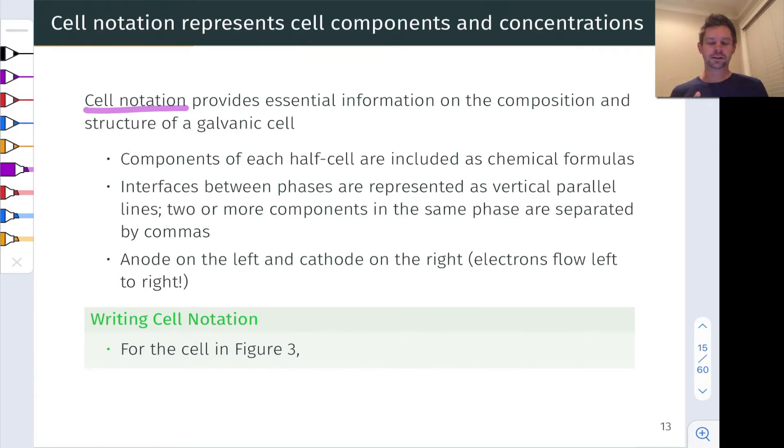So what goes into the cell notation? First of all, we need to include all the components, all the chemical species that matter. Anything that appears in the balanced chemical equation for the redox reaction that occurs in the cell needs to appear in the cell notation.